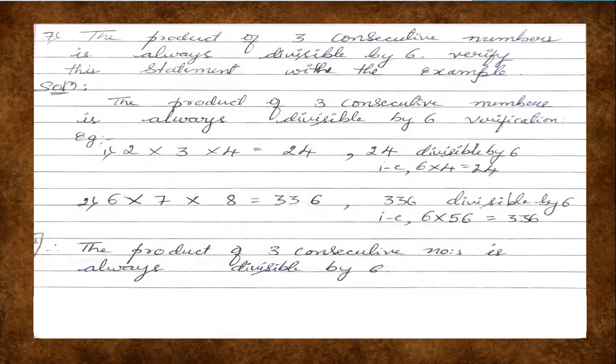Solution: The product of three consecutive numbers is always divisible by 6. Verification — so we go through an example and prove that three consecutive numbers are divisible by 6. Consecutive numbers means one after the other. So for the first example: 2 × 3 × 4. So 2, 3, and 4 are three consecutive numbers. 2 × 3 = 6, 6 × 4 = 24.